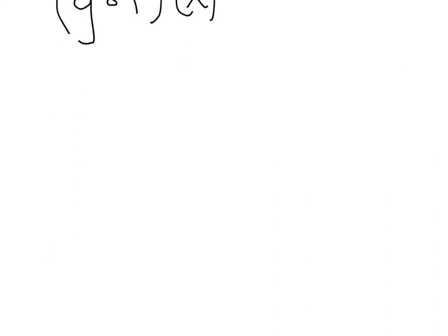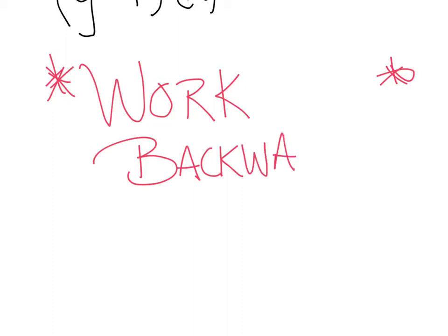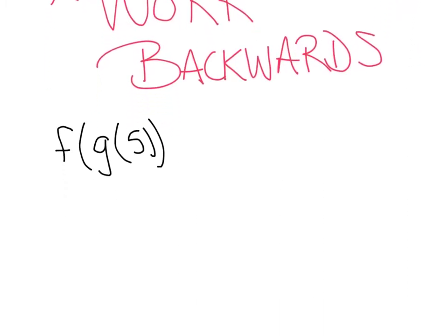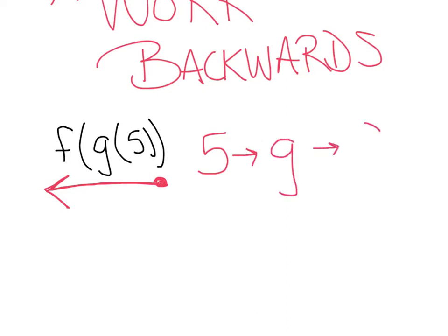Either way you write it, the whole idea — and star this in your notebook — we want to make sure we work backwards. If I have the function F of G of 5, I'm going to start on this end and go toward the arrow tip. I take 5, put it into G, and take that output into F.